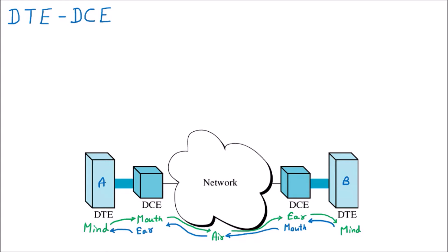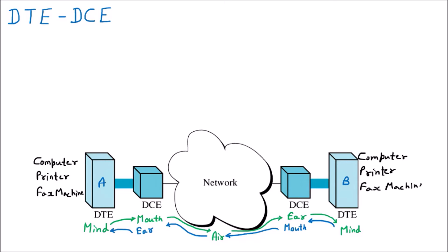Now taking all the technical terms: DTE is the device that is going to work with the data and understand the data. In real networking, the examples of DTE devices are the computer, the printer, or the fax machine. Communication between computer to computer, computer to printer, printer to printer, or computer to fax machine — all come under the DTE and DCE interface, and computer, printer, and fax machines act as the DTE.